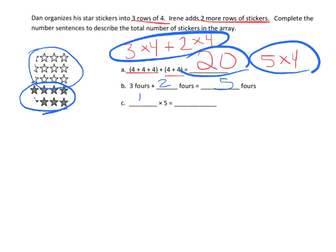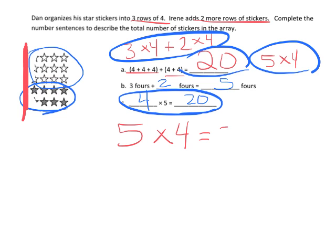Here we could do 4 times 5 equals 20. I don't like this because in previous lessons they've been trained to think of the rows first. So really this would be 5 rows of 4 equals 20. In my mind, this should be a 4 and then this should be a blank, meaning we're looking for the answer 5.